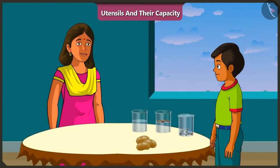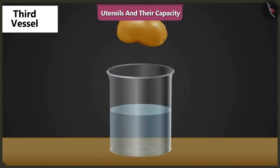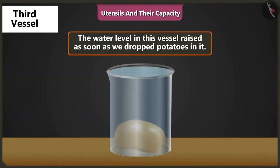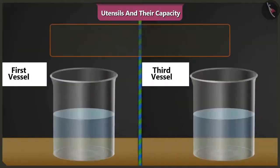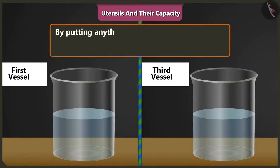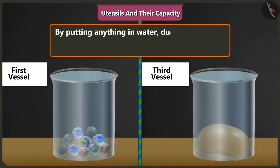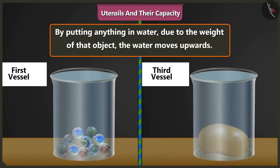Come on, Mishtu. Now let's drop these potatoes in the third vessel. Wow! The water level in the vessel raised as soon as we dropped potatoes in it. So, we saw that when we drop any object in water, due to the weight of that object, the water moves upwards.